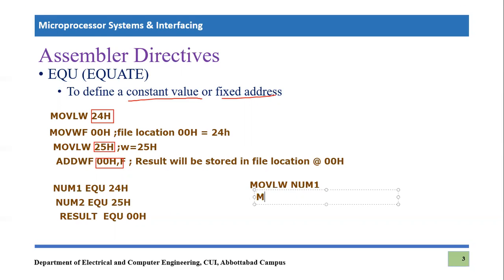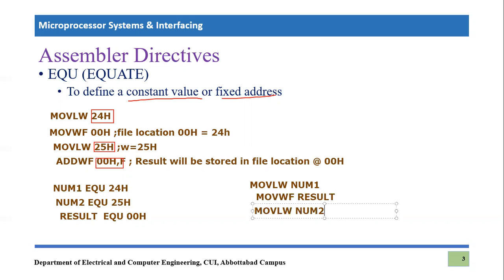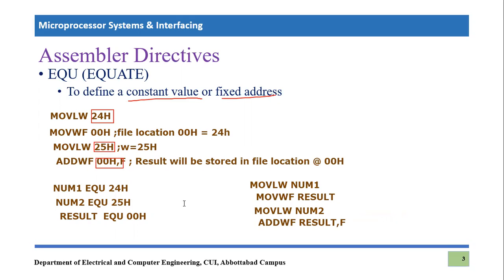So what is the difference between the two versions of the code? The second version is much more easily understandable — we know there are two numbers, NUM1 and NUM2, both are being added, and the result is stored in the location called RESULT. The compiler knows all of this because we defined these values using the EQUATE directive. That is the functionality of EQUATE — it clarifies things for the programmer.